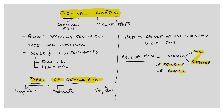Good morning students. Today we are going to start with the next chapter, that is chemical kinetics. In thermodynamics we studied about spontaneous and non-spontaneous reactions — thermodynamics tells you about spontaneity, and the factor delta G tells you whether the reaction is feasible or not. But it does not tell you about the kinetics or speed of the reaction.